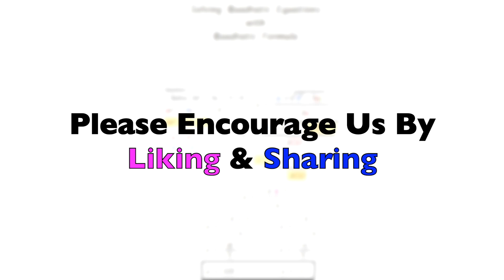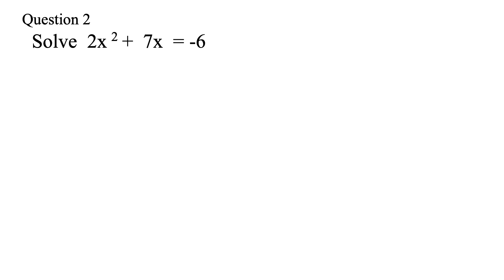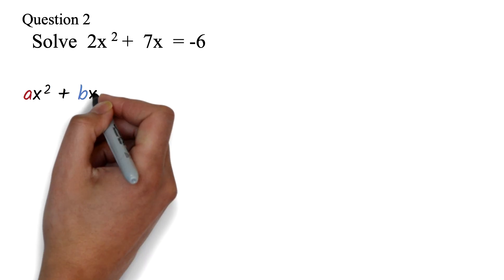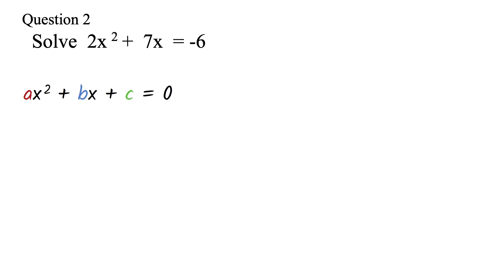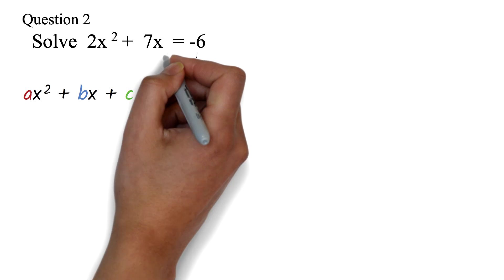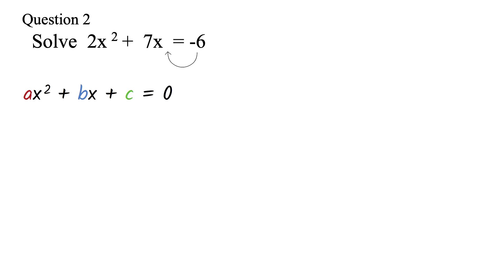Let's take our next question. Question 2: Solve the quadratic equation 2x squared plus 7x equals negative 6. We will be using the quadratic formula. First, make sure your equation is in the form ax squared plus bx plus c equals 0 — everything on one side and 0 on the other. This is not in that form. We have to move the negative 6. Because it is negative, we can move it across the equal sign to become positive. So we will have 2x squared plus 7x plus 6 equals 0. Now it's in the form that we want.